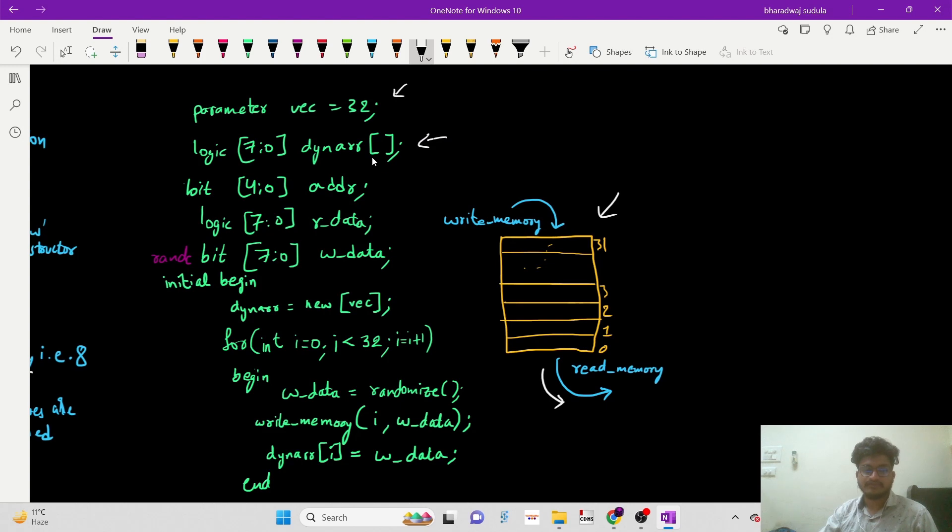a dynamic array which can be parameterized with the variable. We have some variables called address to locate the location in the memory, and our data for reading the data from memory and write data. This is